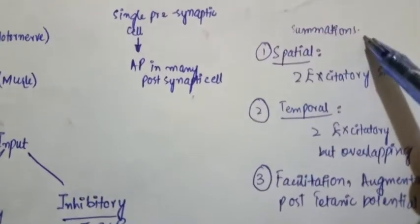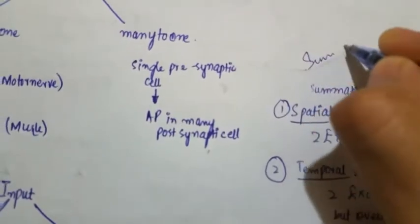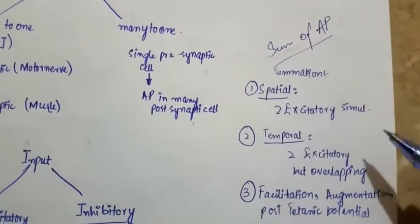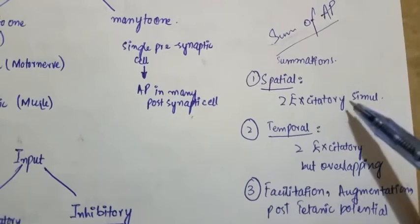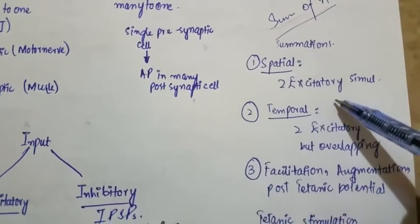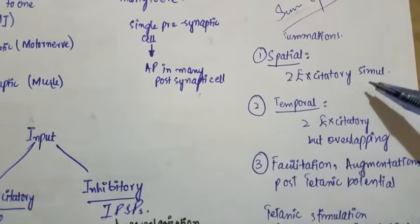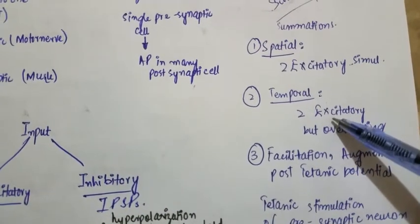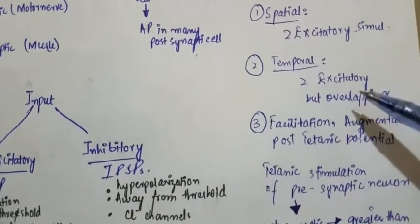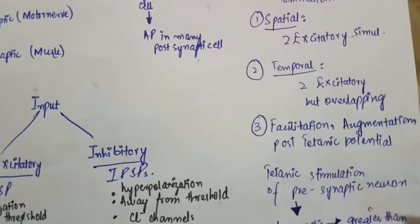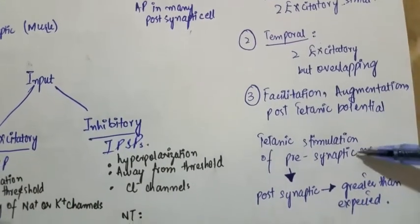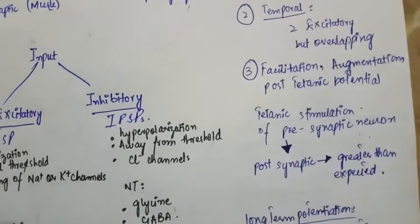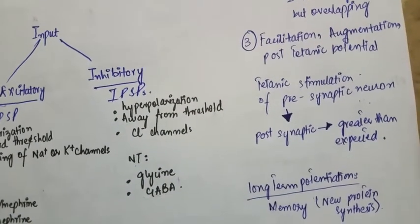Summation refers to the sum of action potentials at the postsynaptic membrane. Spatial summation occurs when two excitatory impulses occur simultaneously. Temporal summation occurs when two excitatory action potentials overlap each other. Facilitation or post-tetanic potentiation refers to repeated stimulation of the presynaptic membrane leading to a greater frequency of action potentials in the postsynaptic membrane than expected.